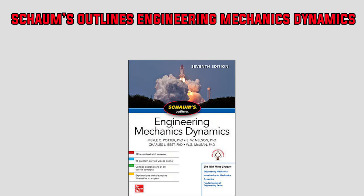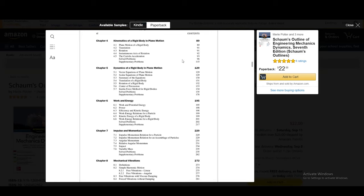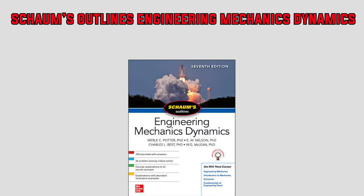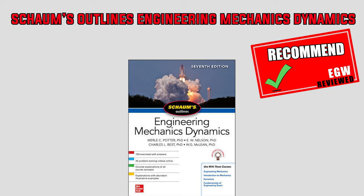Last but not least is the seventh edition of Schaum's Outline of Engineering Mechanics Dynamics. Now, this is not a textbook, but rather a supplement to your textbook. This is a perfect resource if you're the type of student who likes to cram two days before an exam or hates reading textbooks and needs a spark notes-type summary. Topics covered include vectors, particle kinematics, particle dynamics, kinematics and dynamics of a rigid body and planar motion, work, energy, impulse and momentum methods, and mechanical vibrations. The hallmark of this book is that it has a whopping 729 full-solved exercises, hundreds of examples, 25 problem-solving videos online, and even one final practice exam. I definitely recommend this highly affordable book if you are enrolled in a dynamics course or are interested in learning mechanics.